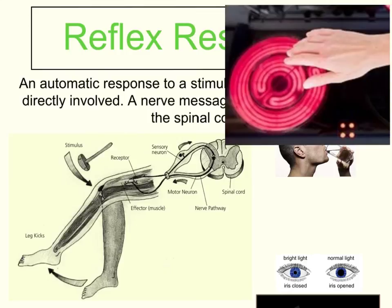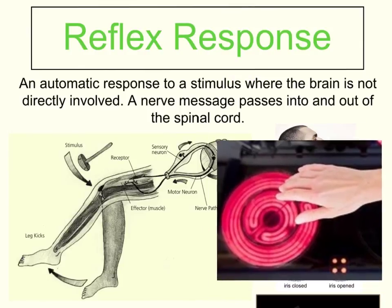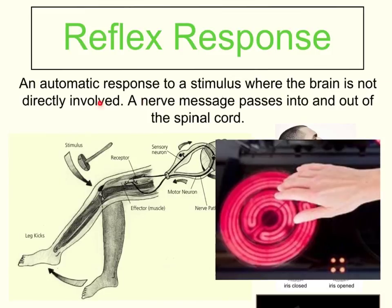You're going to get hurt due to that time. So in a reflex response, the message goes along the sensory neuron to the spinal cord, straight back along the motor neuron to the effector — which in this case is the muscles in your arm — to pull your hand away before your brain has even had time to process it. It's all about cutting back on time to minimise the amount of damage we do to ourselves. That's why, in a reflex response, the brain is not directly involved. A nerve message passes into and out of the spinal cord directly, so that we can cut the amount of time in which damage is happening.